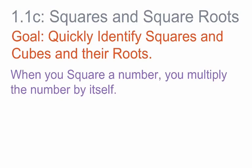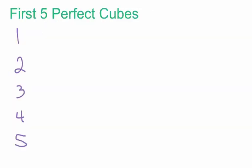The first thing we need to know is that when you square a number, you multiply the number by itself. On the other hand, when you square root a number, you must ask: what number must be multiplied by itself to equal the square root? Just like addition and subtraction are opposites and multiplication and division are opposites, squaring a number and square rooting a number are also opposite operations.